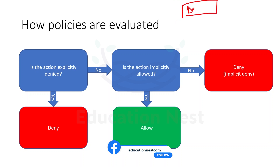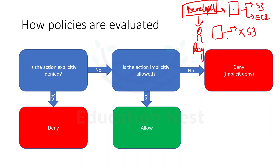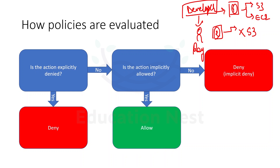We have a group of developers. To this group, I have assigned a policy giving access to S3 and EC2. Inside the developer group, I have one person called Roy, and to Roy I have applied one policy which says that Roy is denied access to S3. So now, two policies are applied: the first at group level and the second at individual level.